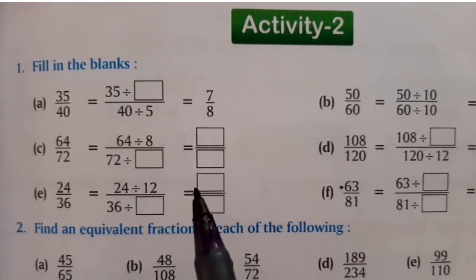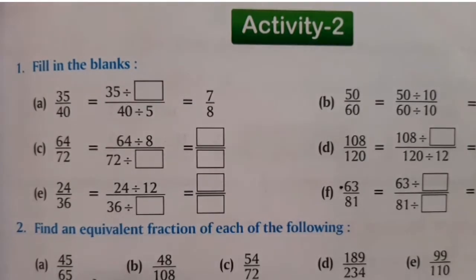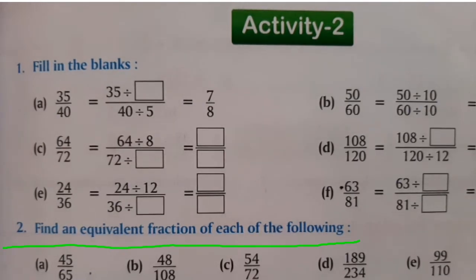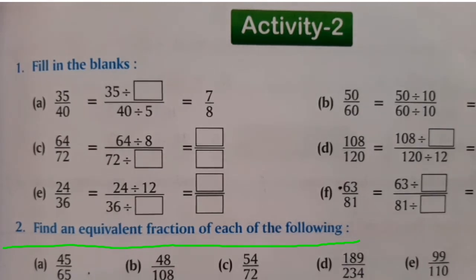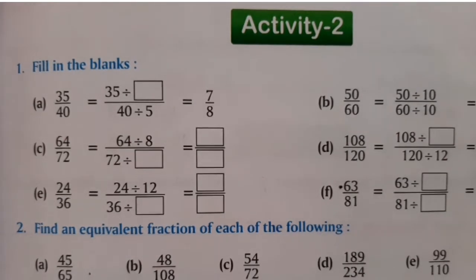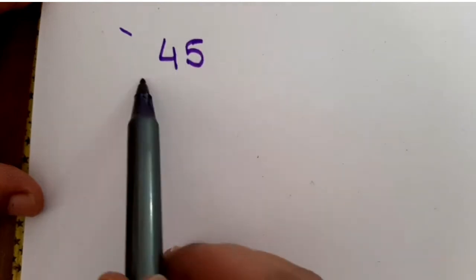You will complete question number 1 now. Come to question number 2. Here the fraction is 45 upon 65. The question is: find an equivalent fraction of 45 upon 65. For equivalent fractions, you can use any method — you can multiply or divide the fraction 45 upon 65.